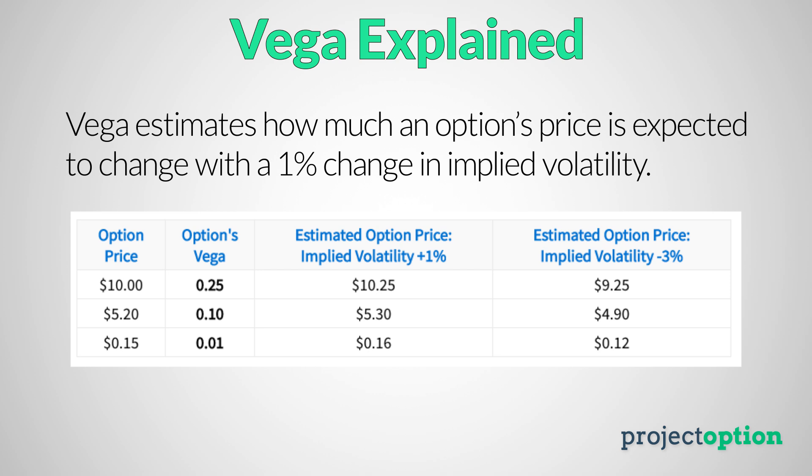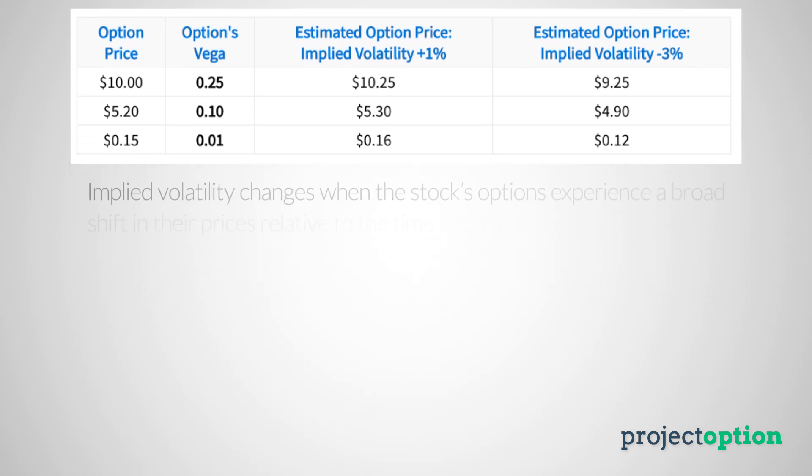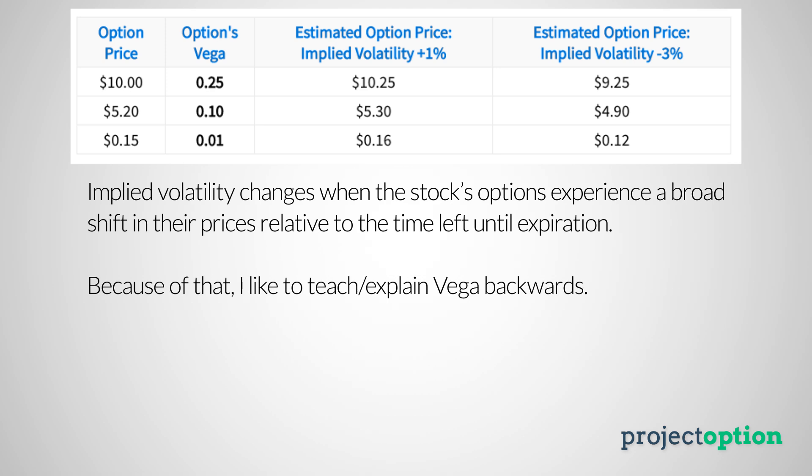If we look at the $10 option with 0.25 vega, the option is expected to be worth $10.25 if implied volatility increases by 1%. That same $10 option with 0.25 vega is expected to be worth about $9.25 if implied volatility were to fall by 3%. But as I mentioned earlier, implied volatility does not magically change — it changes when a stock's option prices experience a broad change due to a shift in supply and demand, which means that the market believes the stock will be more or less volatile in the future based on those option prices.